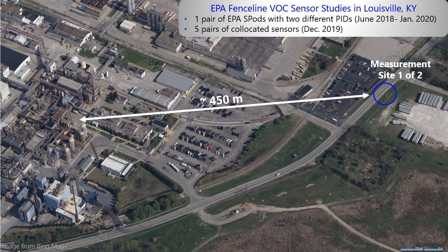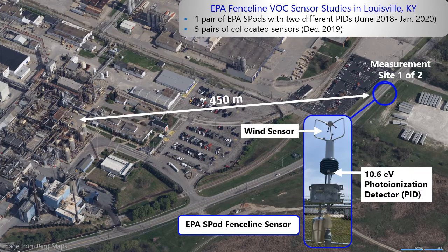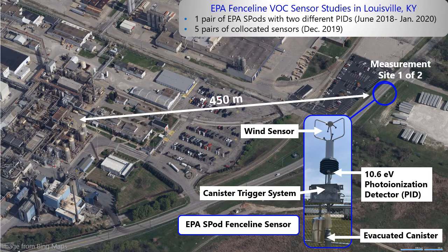These EPA studies were conducted at a site about 450 meters from a facility in Louisville, Kentucky. Two studies were completed here: the first was a study where a pair of EPA S-pods collected data for about two years, and the second was a comparison study where sensors from five different manufacturers ran continuously for about one month in 2019. All sensors were co-located, meaning two similar sensors ran at once to be compared for precision. The EPA S-pod consists of a 3D sonic anemometer at the top for wind data, a photoionization detector (PID) for signal data, and a canister trigger system that can collect an air sample in an evacuated canister to later identify exactly which chemical compounds were present at the time of sampling.